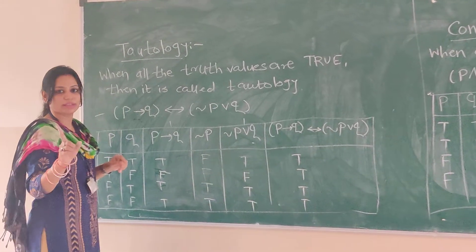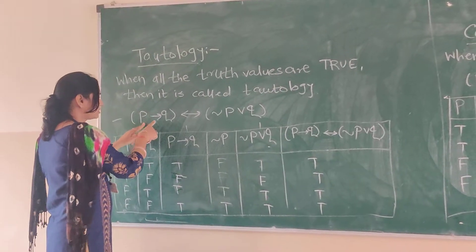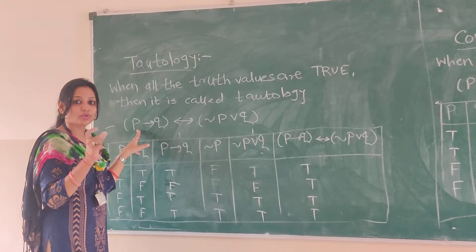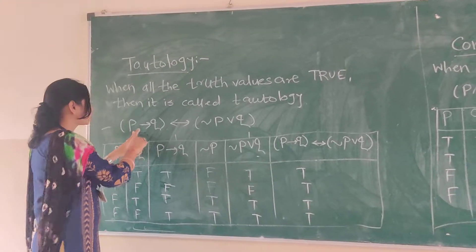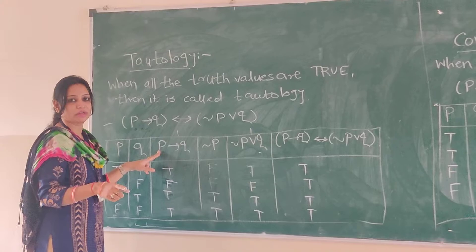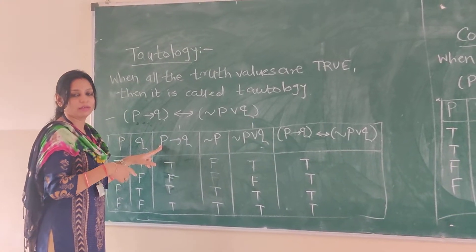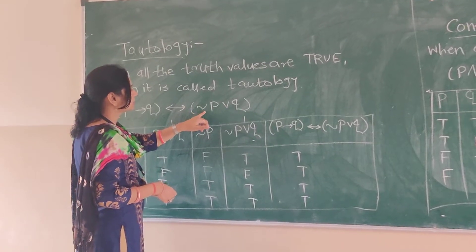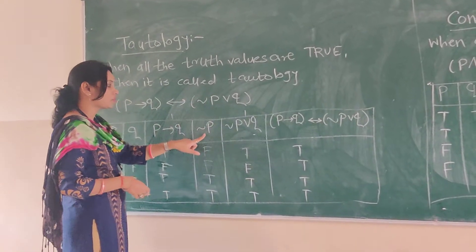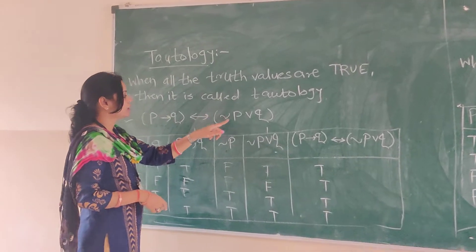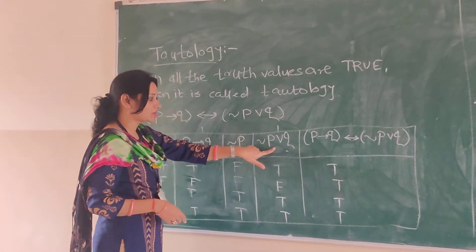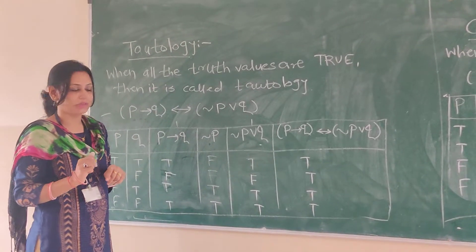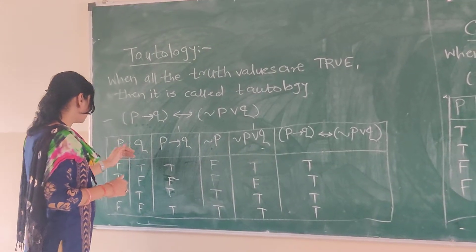Two propositions are there: p and q. As mentioned in our last section, solve the brackets first. So p tends to q will be the first column in the truth table. Then in the second part, as it is negation of p or q, first find out the negation of p, then negation of p or q, and then combine both by the biconditional statement.